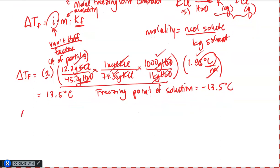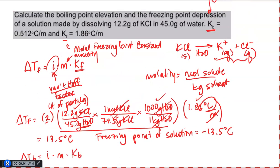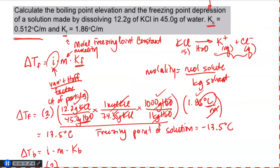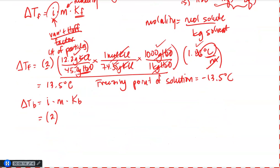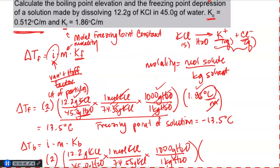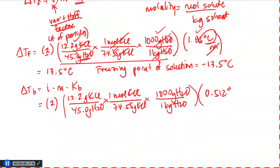They also asked me for the boiling point elevation of the same solution. Again, the equation has a similar format: it would be the Van't Hoff factor for the solution times the molality, but this time I multiply by the molal boiling point constant KB given in the problem. So substituting in: that's two — because of the two particles, the potassium cation and the chloride anion present in solution — and my molality calculation is identical to the one I did for the freezing point depression calculation. Then I multiply by the molal boiling point constant, which is 0.512 degrees Celsius per molal.